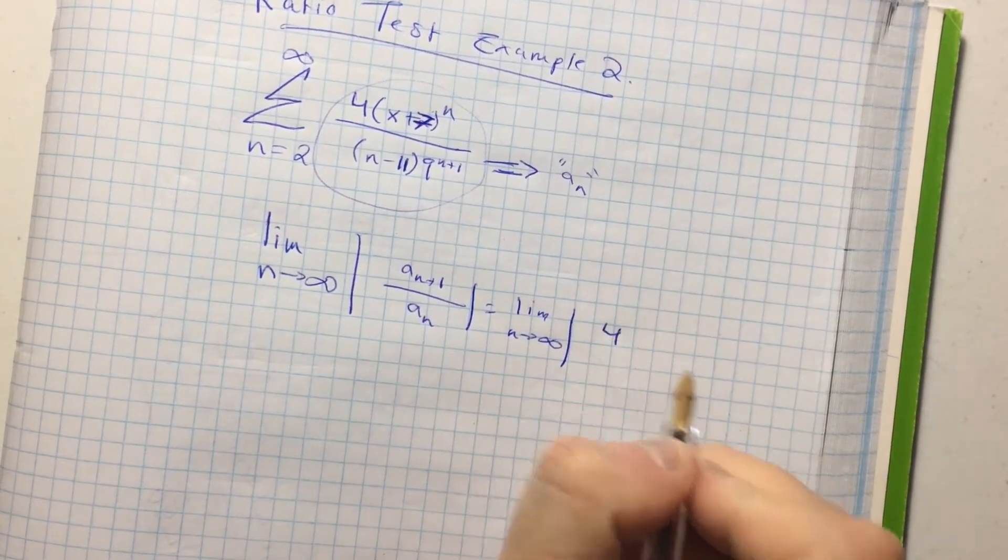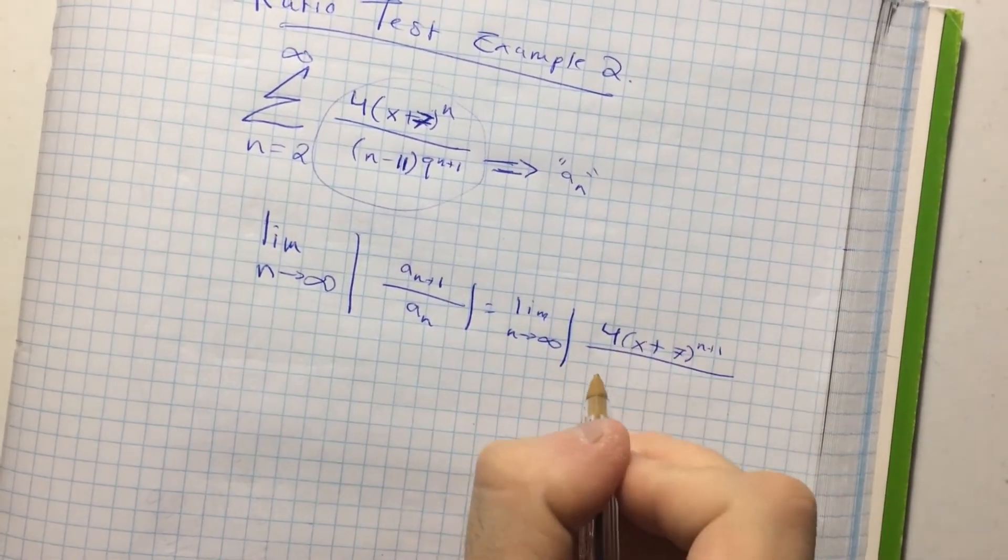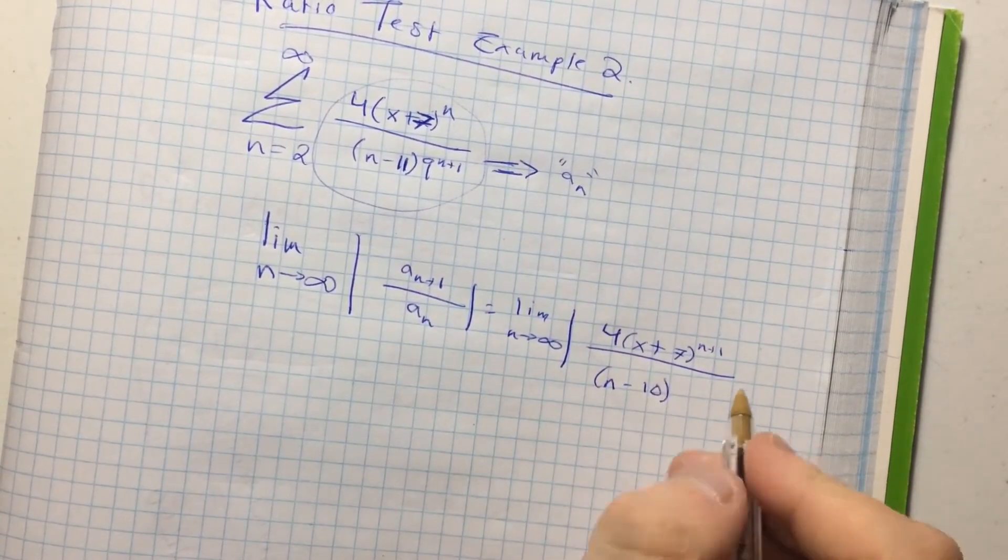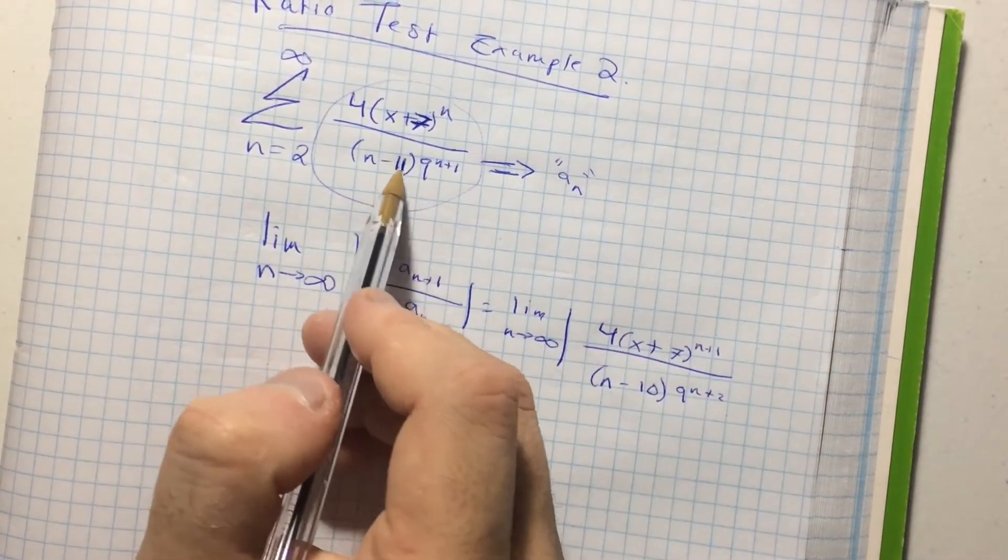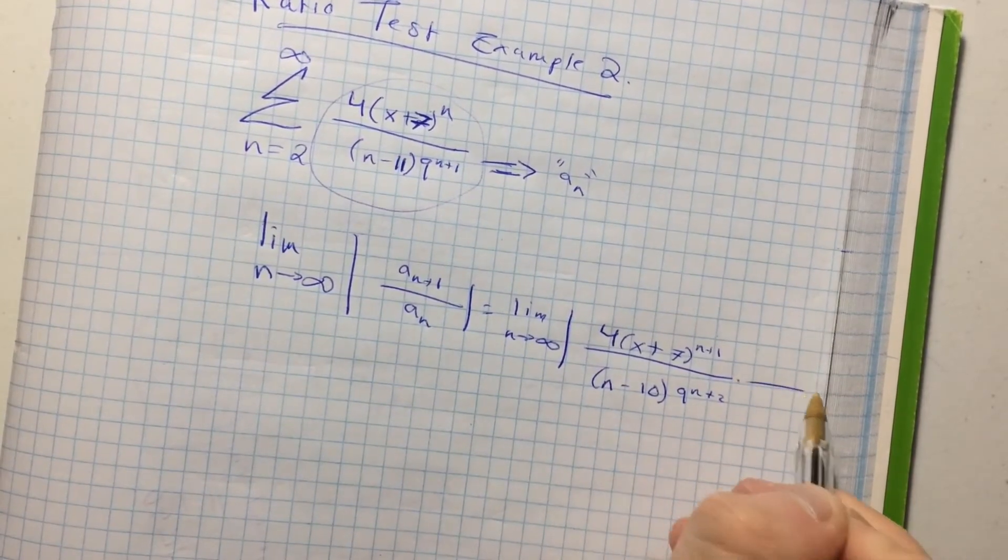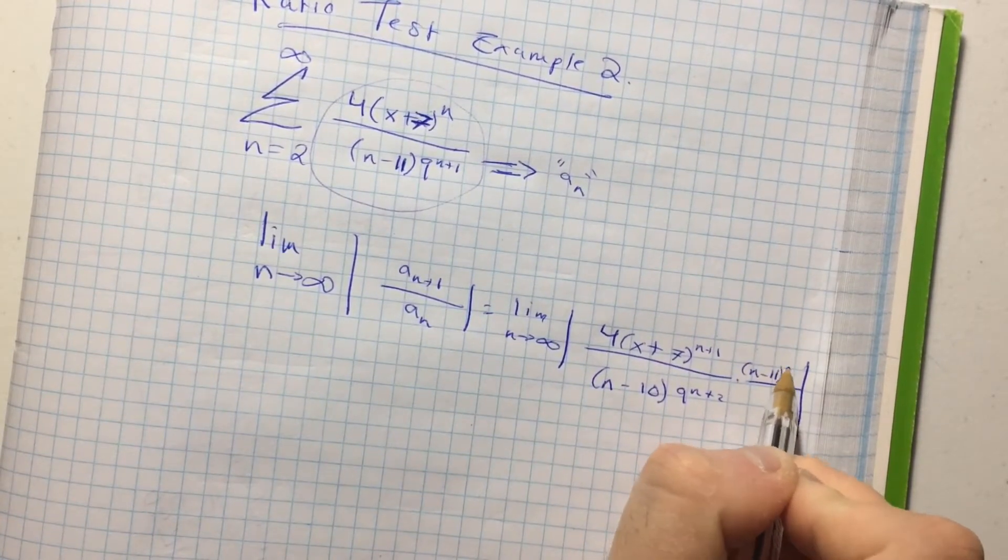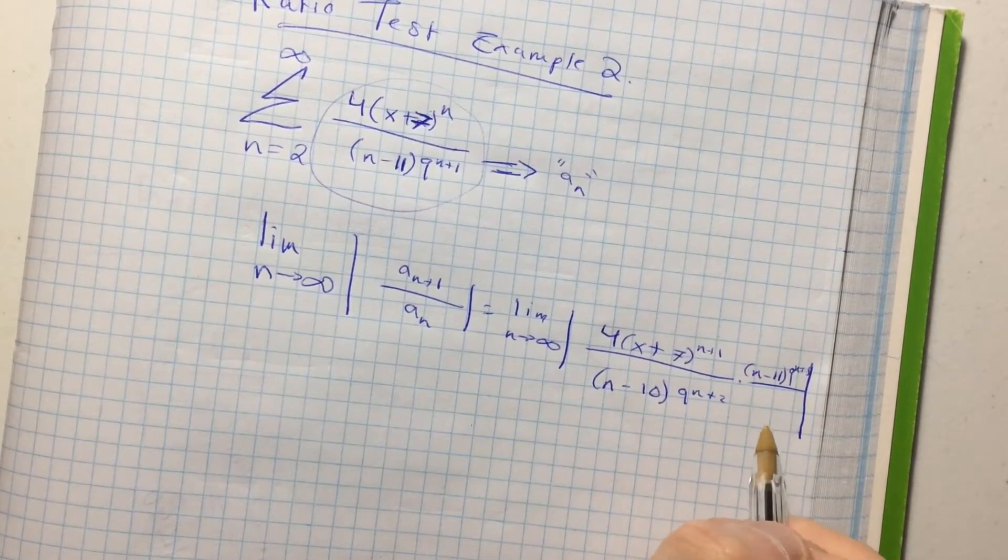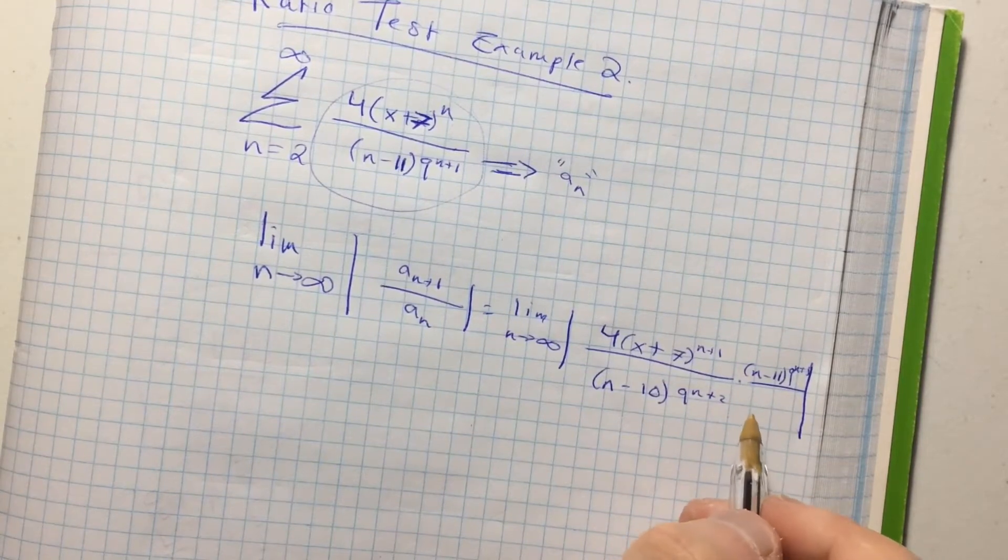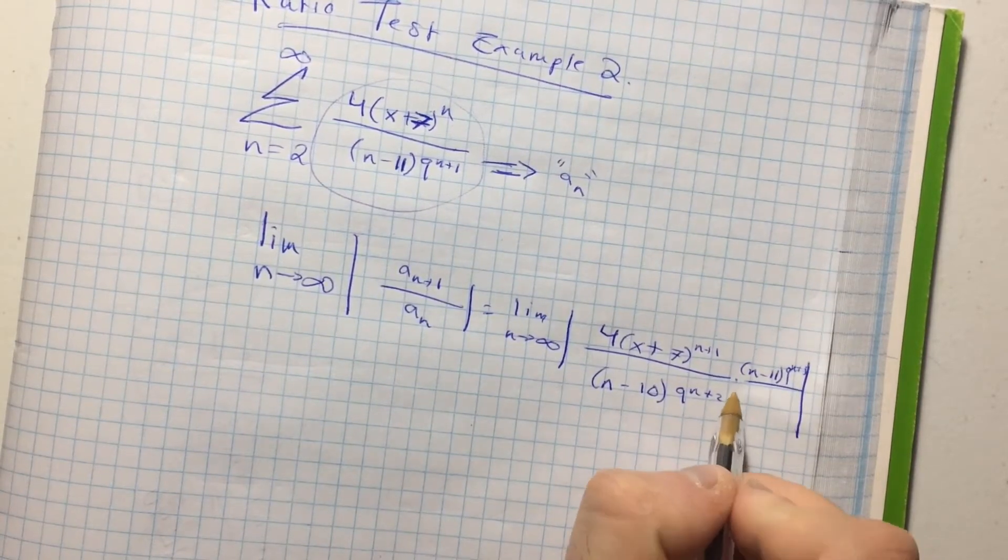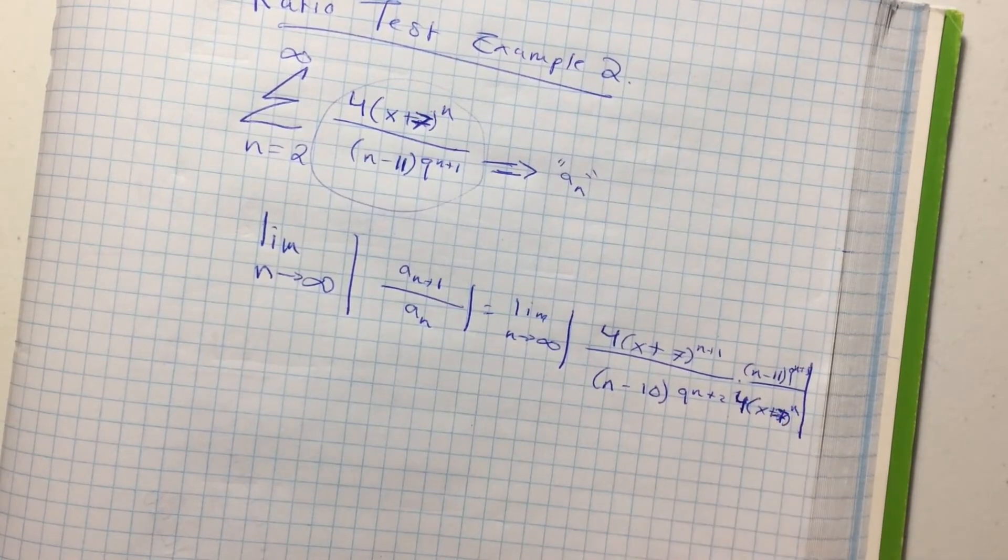So that's 4 times x plus 7 to the n plus 1 over n minus 10 times 9 to the n plus 2, because this was n minus 11, but because I'm plus 1, it's minus 10 now. And that's multiplied by the reciprocal. I don't know if I'll have enough room here. This will be n minus 11, 9 to the n plus 1. Sorry about that. I'll rewrite that in a second. I'm sorry about how messy that is. I should have given more room.